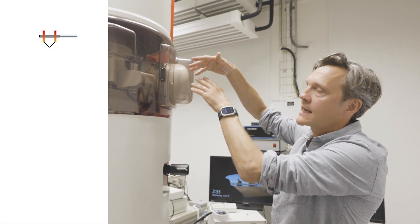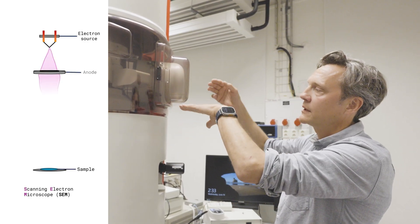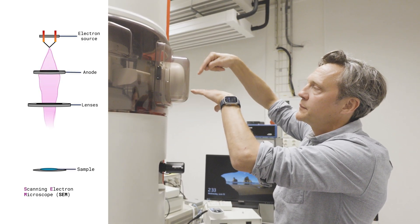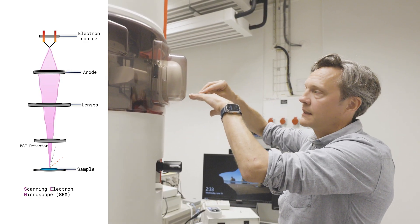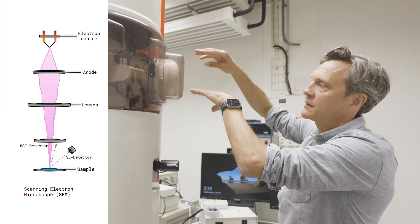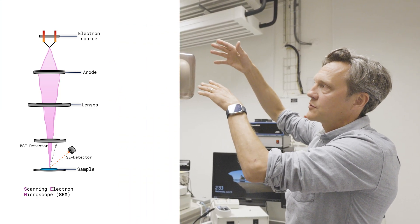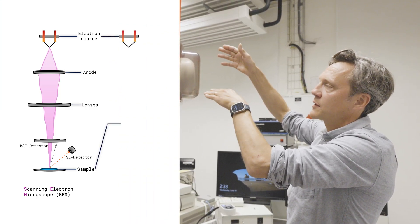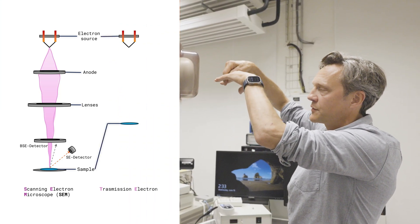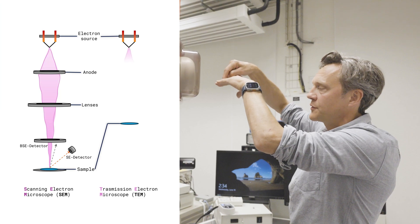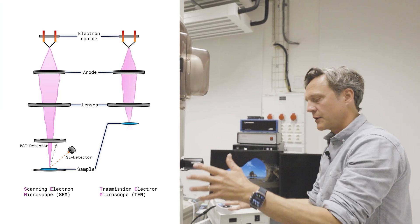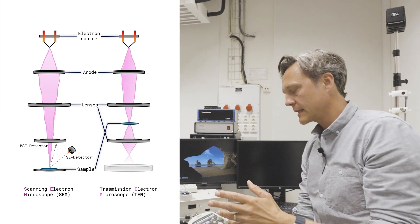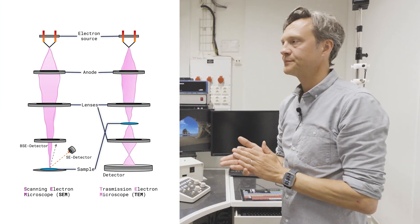In a scanning electron microscope, you have a bulk sample and the beam interacts with the sample surface and is emitted from it. In transmission electron microscopy, the electrons go through the sample, they are scattered, and then you detect them below to get an image.